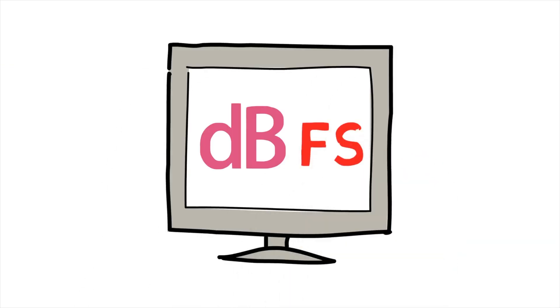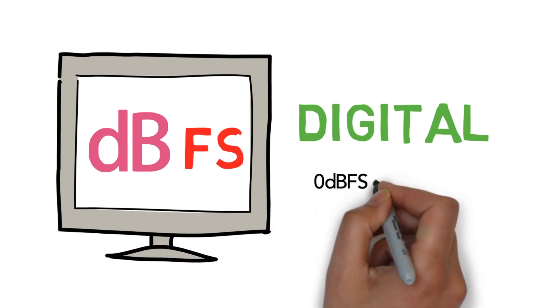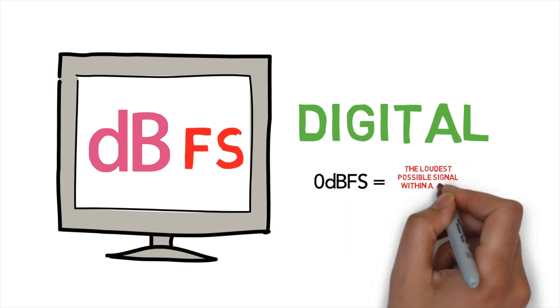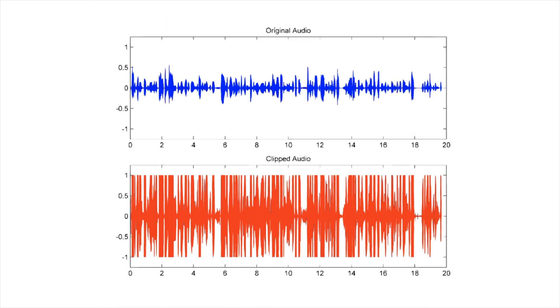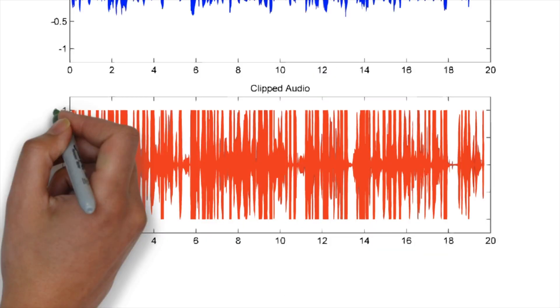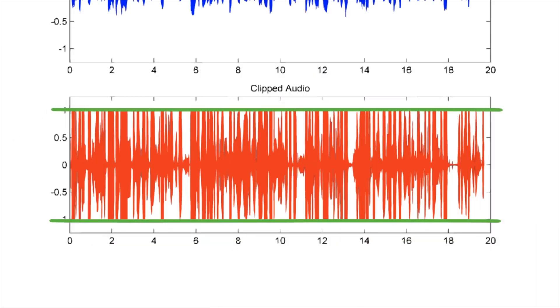Next up, we've got decibel full scale, or FS. This is used in digital systems. In this case, values are with reference to the loudest possible signal within a given digital system. Most of us are actually pretty familiar with this. If you've ever seen audio that looks like this, it means it cannot be turned up anymore. That is 0 dBFS.